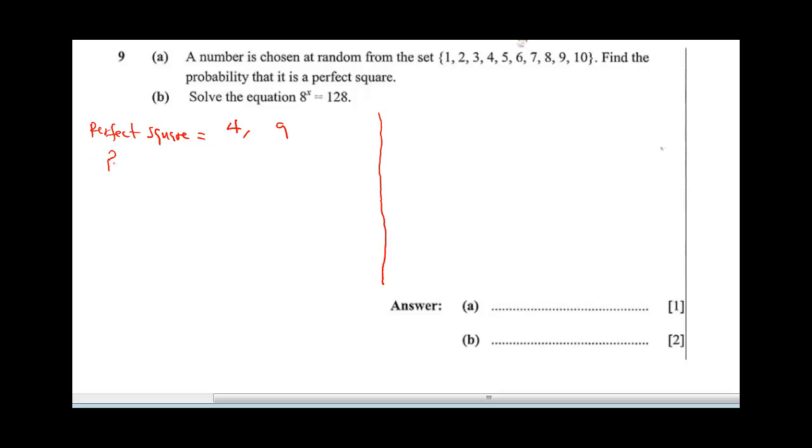Probability of having a perfect square will be 2 over, what's the total set of numbers? That's 10. So this would be 2 over 10, which is 1 over 5.